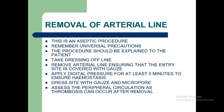Removal of an arterial line is an aseptic procedure. Remember universal precautions. The procedure should be explained to the patient. Remove the dressing, then remove the arterial line ensuring the entry site is covered with gauze. Apply digital pressure for at least five minutes to ensure hemostasis. Dress the site with gauze and micropore. Assess peripheral circulation afterwards, as thrombosis can occur after removal.